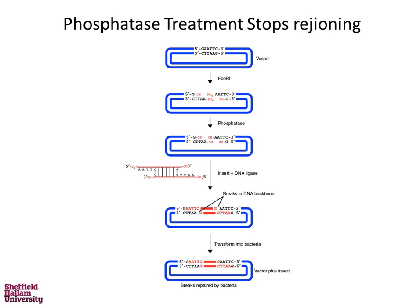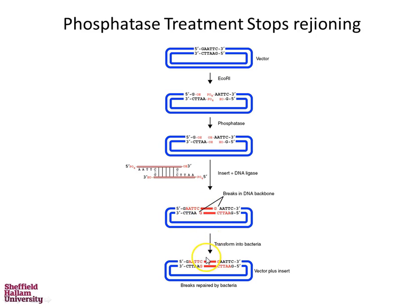When cutting and working with our plasmids, we often have to use phosphatase treatment. When we cut our plasmid it becomes linear, and it may have ends that are compatible, making it theoretically possible for the vector to ligate back on itself and reform the circle. To prevent this, phosphatase is used, which removes the phosphate group from the end of the DNA, leaving no compatible site for DNA ligase to work on. The only thing with a compatible phosphate end is our new DNA insert, so DNA ligase can then use this to join up our piece of DNA.